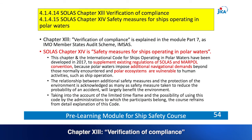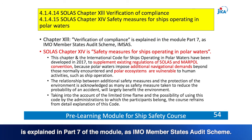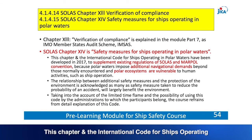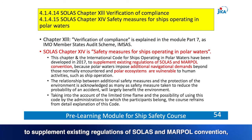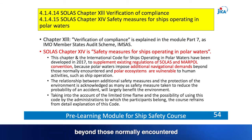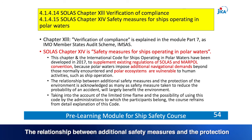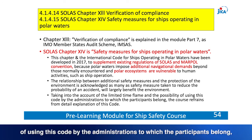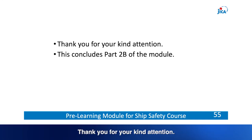Chapter 13 — Verification of Compliance — is explained in Part 7 of the module as the IMO Member States Audit Scheme. Chapter 14 covers Safety Measures for Ships Operating in Polar Waters. This chapter and the International Code for Ships Operating in Polar Waters were developed in 2017 to supplement SOLAS and MARPOL, as polar waters impose additional navigational demands and polar ecosystems are vulnerable to ship operations. A detailed explanation of this code is not provided in this module. This concludes Part 2B of the module.